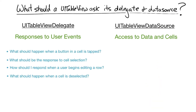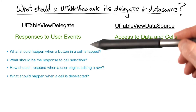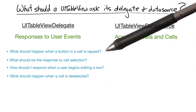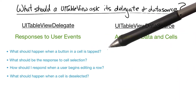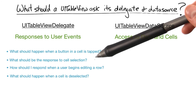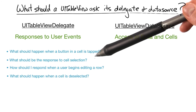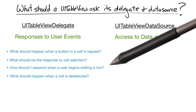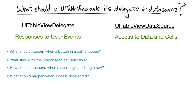The table uses its delegate protocol to ask event questions like these: What should happen when a button in a cell is tapped? What should be the response to cell selection? How should I respond when a user begins editing a row? What should happen when a cell is deselected?